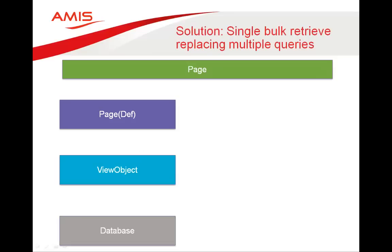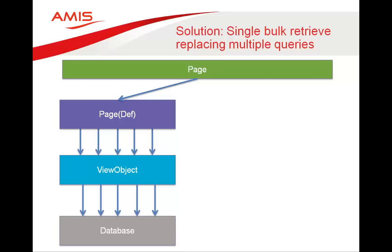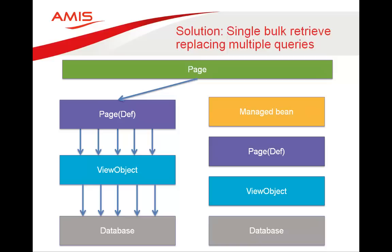What is the solution? The solution for a master-detail page is to use a single bulk query that retrieves all the necessary data and replaces all the multiple queries. On the left we show the old situation where many mini-queries are being executed — see how inefficient it is. On the right, we query in one single bulk all the necessary data at once. We could use a managed bean to programmatically execute the view object from the page definition using an executeWithParams. This is much more efficient.